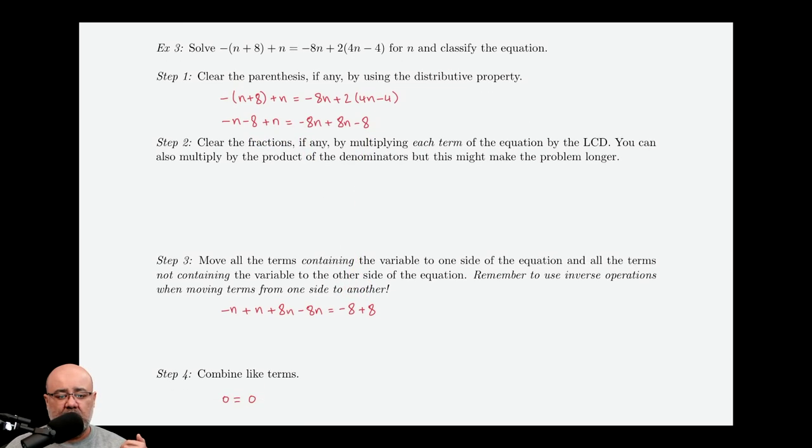At this stage, we can combine like terms, but hopefully you see something cool happening here. Negative n plus n is 0. Not n, it's just 0. If you subtract something from itself, you always get 0 as the answer. Similarly, 8n minus 8n will be 0 again. So, 0 plus the 0 would just give us 0 as the answer.